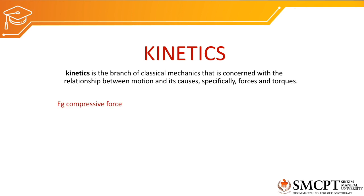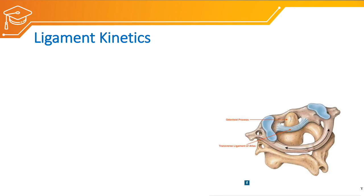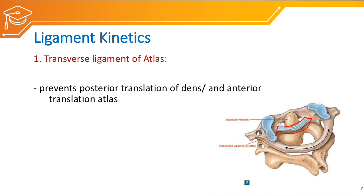There are different types of force: compressive force, distractive force, shearing force, torque, etc. First, let us discuss the forces generated by ligaments. Ligament forces are responsible for stabilization. The first ligament is the transverse ligament of the atlas, located behind the dens of the axis. This transverse ligament prevents the posterior translation of the dens and the anterior translation of the atlas.